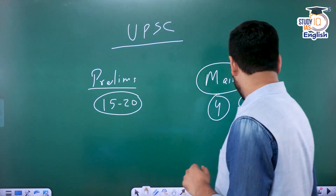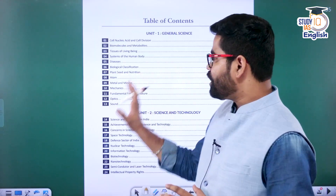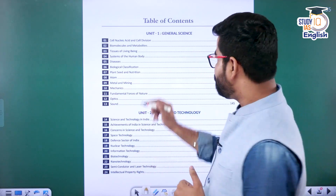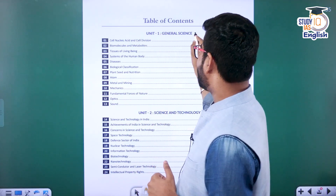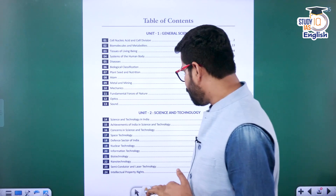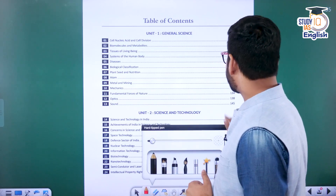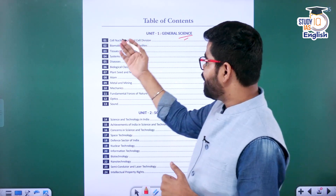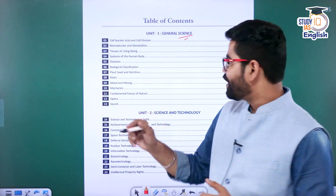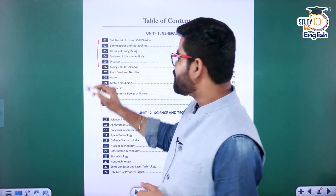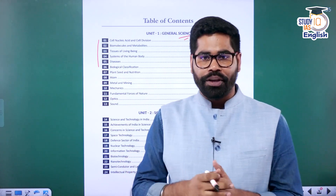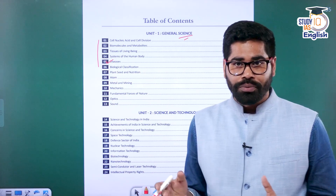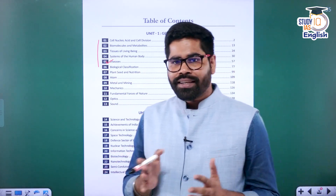So now in this initiative, we are going to discuss the entire section of science one by one. First of all, we will focus on the general science portion. We will try to find out what is there in the general science section and go chapter by chapter. We will start with cell, biomolecules, tissues — the first six chapters are from the basic part of biology. We will also discuss about diseases, the systems of the human body, and related aspects.